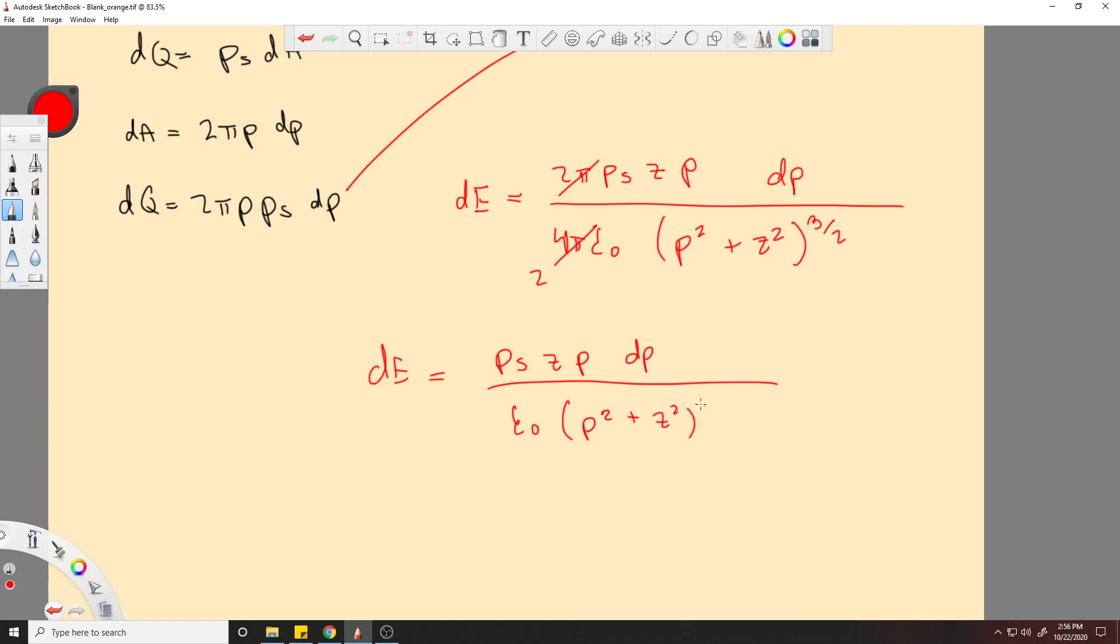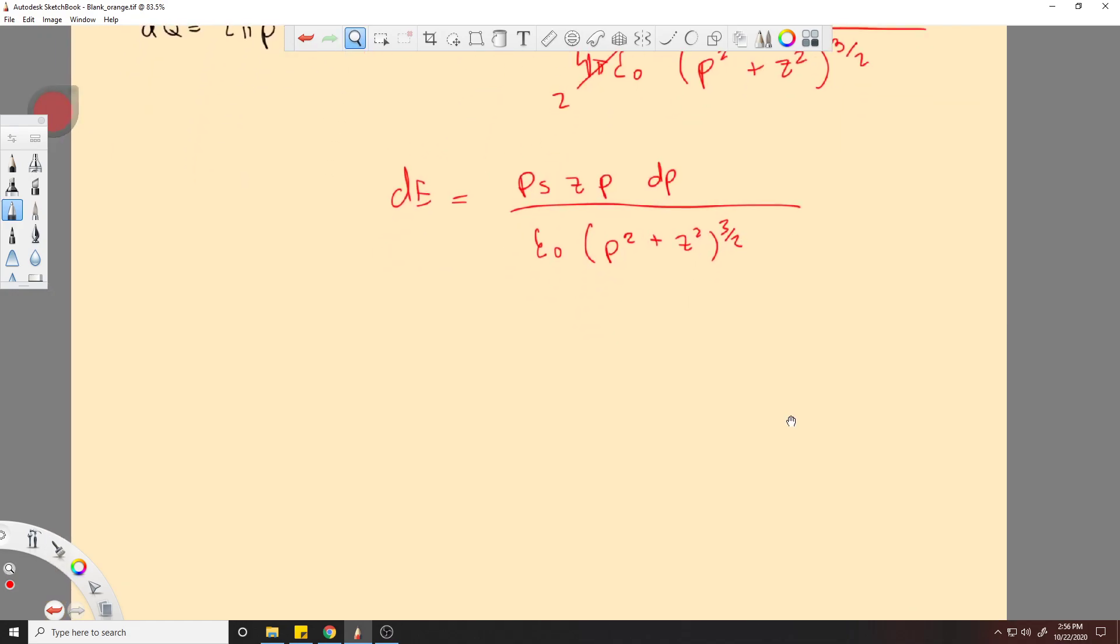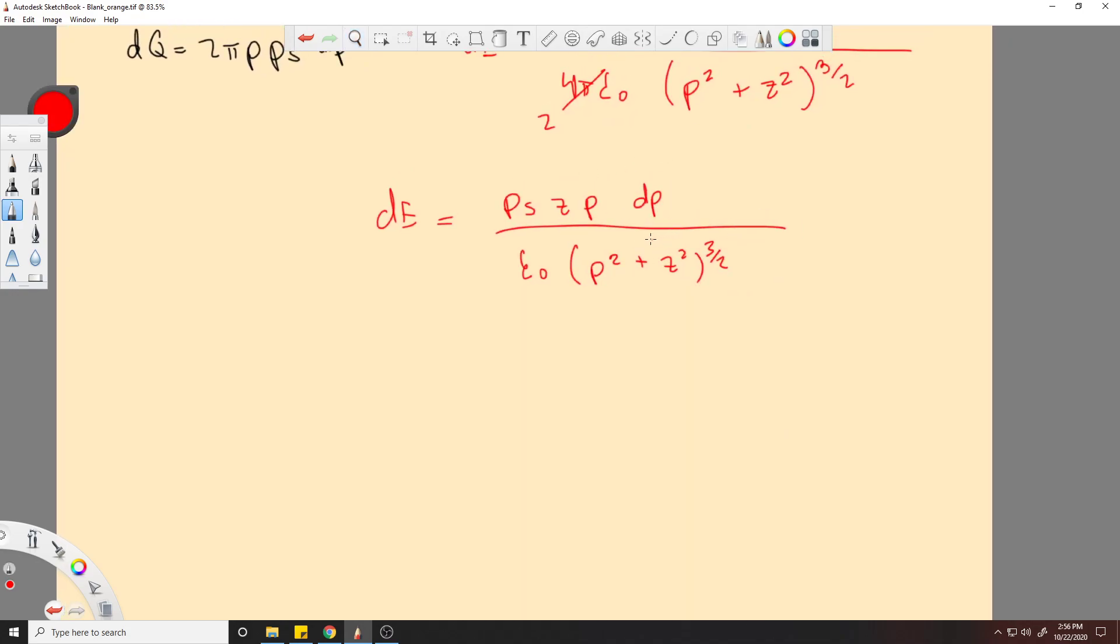Rho squared plus z. Because we're dealing with cylindrical coordinates, right? So okay, so what's next?